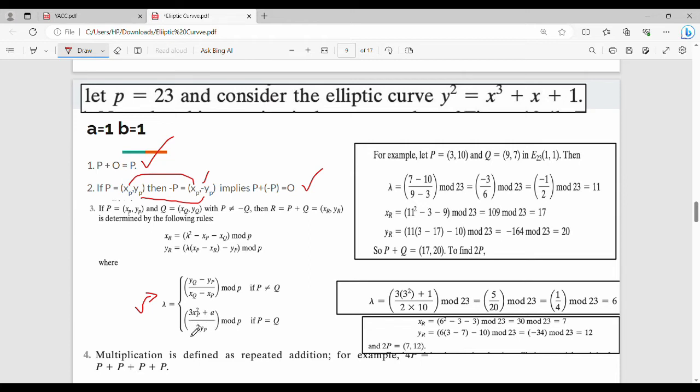For P = Q, λ = (3xₚ² + a)/(2yₚ) mod p. Then we can calculate xᵣ and yᵣ using these formulas. The additional mod operation is included in these formulas.